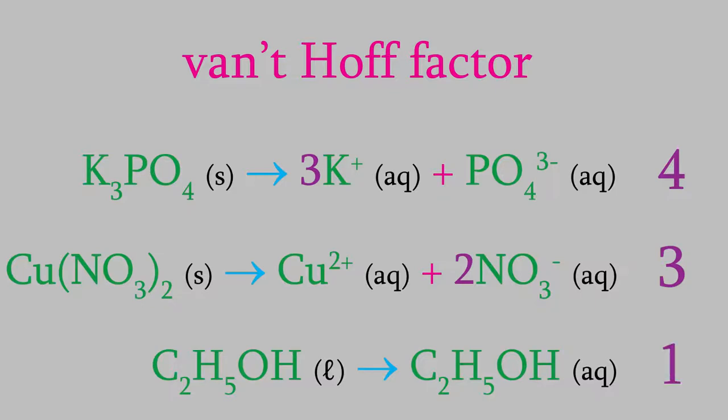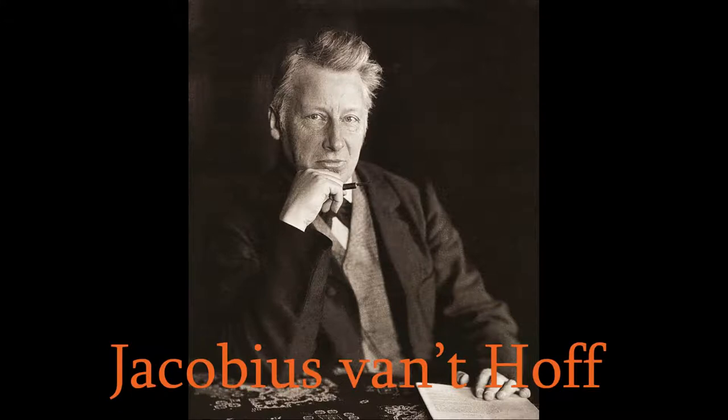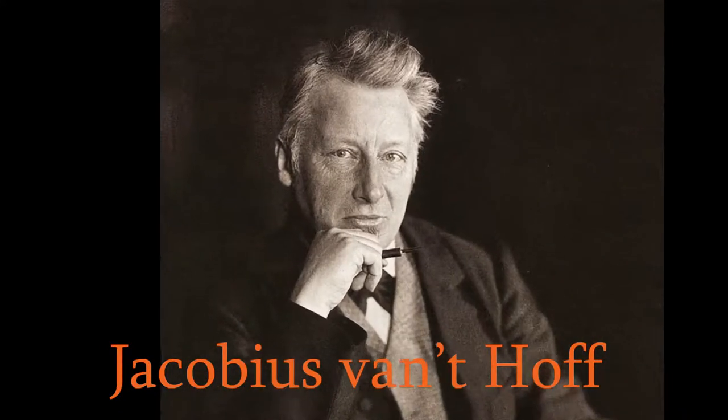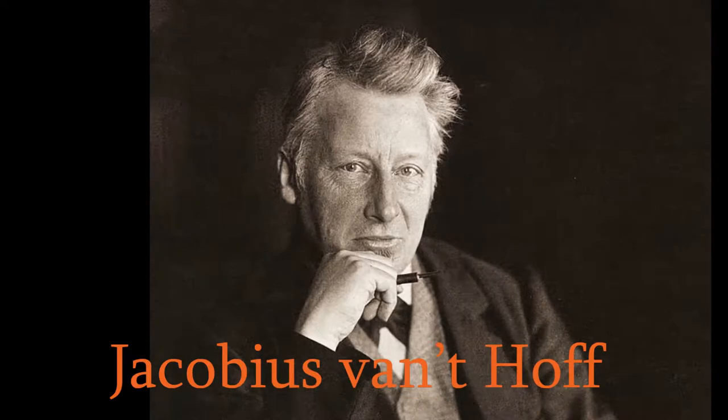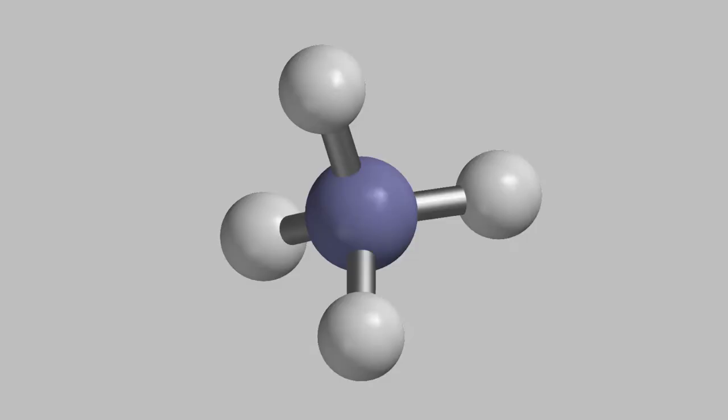The van't Hoff factor was named after the Dutch chemist Jacobus van't Hoff. He studied lots of properties of soluble compounds, and he was also the first person to propose the idea that molecules could have tetrahedral shapes in 1874, which is something you learned about in General Chemistry I. His work was so important, he was awarded the very first Nobel Prize in Chemistry in 1901.